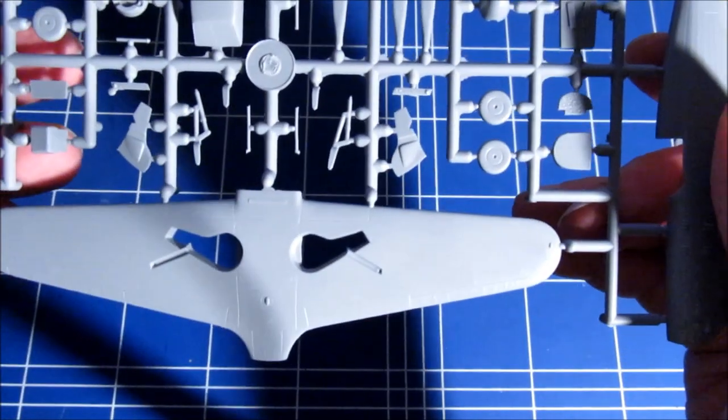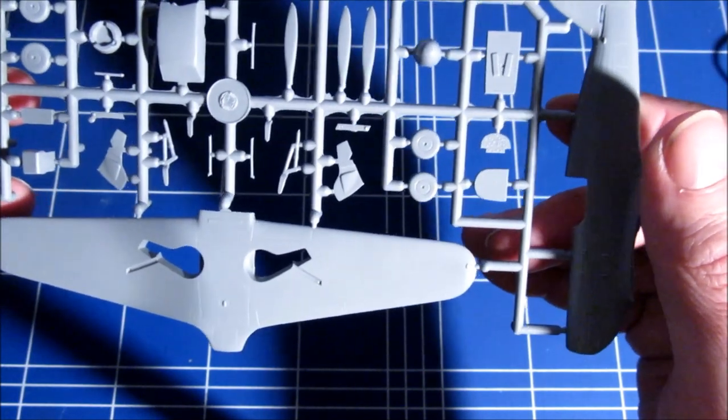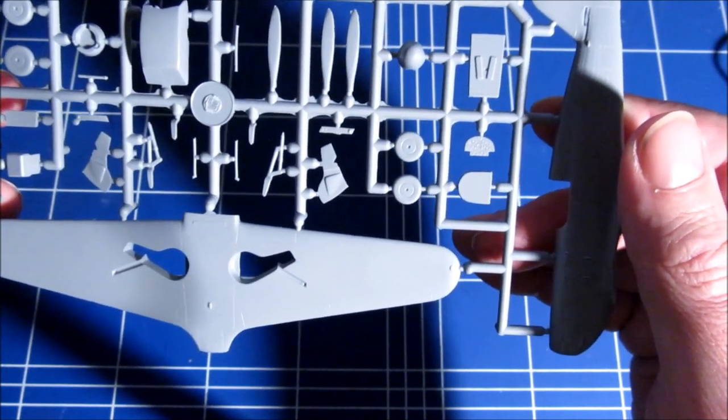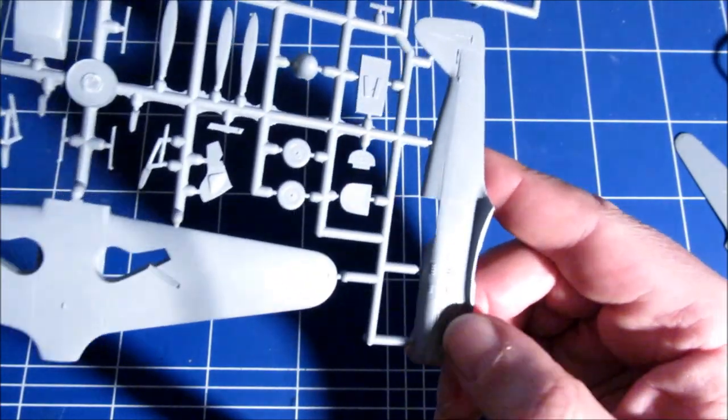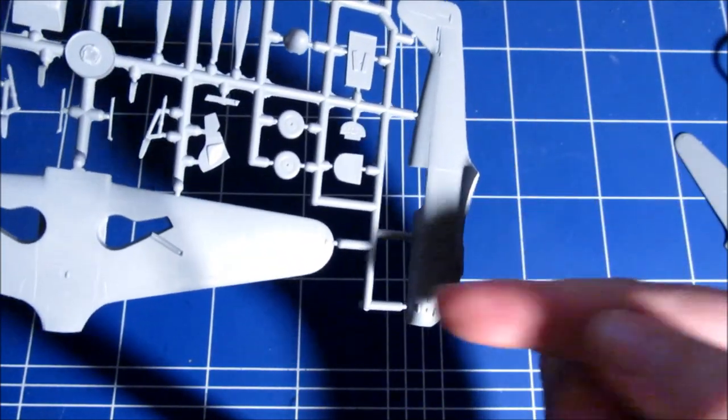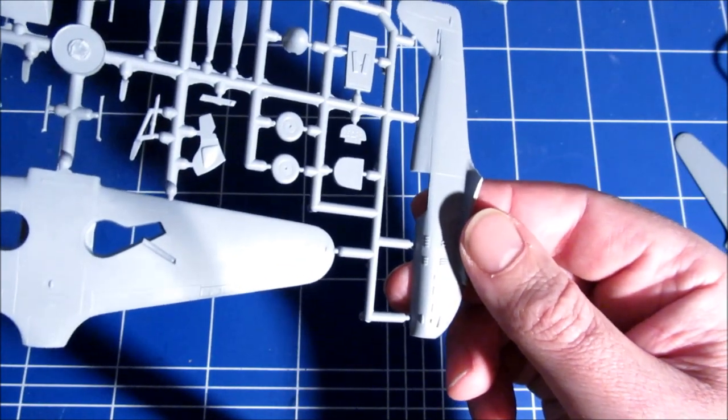There's just a very light scribing of the position where the machine gun should be. So that's a bit of a weird thing. They indicated the position but they didn't actually mold the fuselage with the gun troughs.